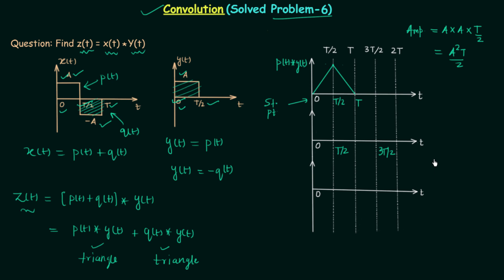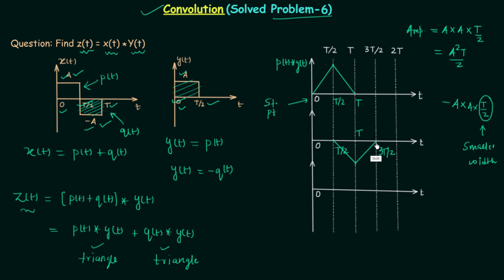The amplitude of Q(t) convolved with Y(t) is minus A square T by 2, because the amplitude of Q(t) is minus A, multiplied by A, multiplied by the width T/2. T/2 here is the smaller width — when you have two rectangular pulses you select the smaller width, but in this case both widths equal T/2. The peak amplitude minus A²T/2 occurs at T equal to T. Joining all points gives the waveform of the second convolution.